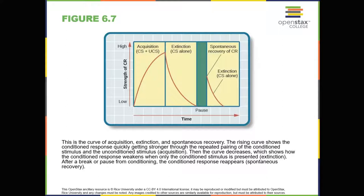Acquisition and extinction involve the strengthening and weakening, respectively, of a learned association. Two other learning processes — stimulus discrimination and stimulus generalization — are involved in distinguishing which stimuli will trigger the learned association. Animals, including humans, need to distinguish between stimuli, such as sounds that predict a threatening event versus sounds that do not, so they can respond appropriately. When an organism learns to respond differently to various similar stimuli, it's called stimulus discrimination — the organism demonstrates the conditioned response only to the conditioned stimulus.